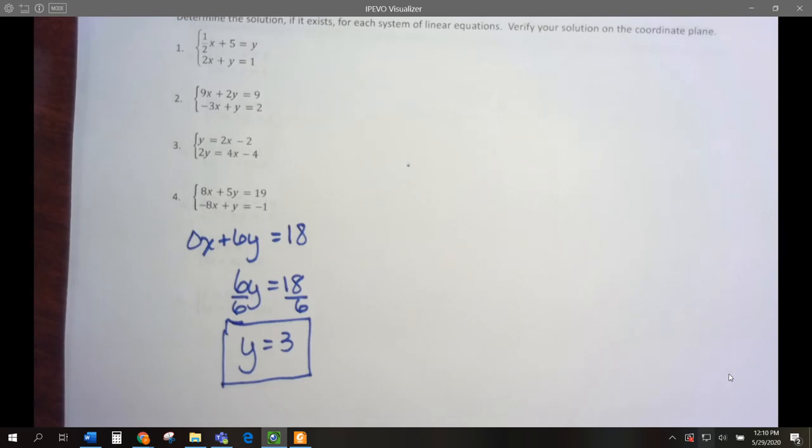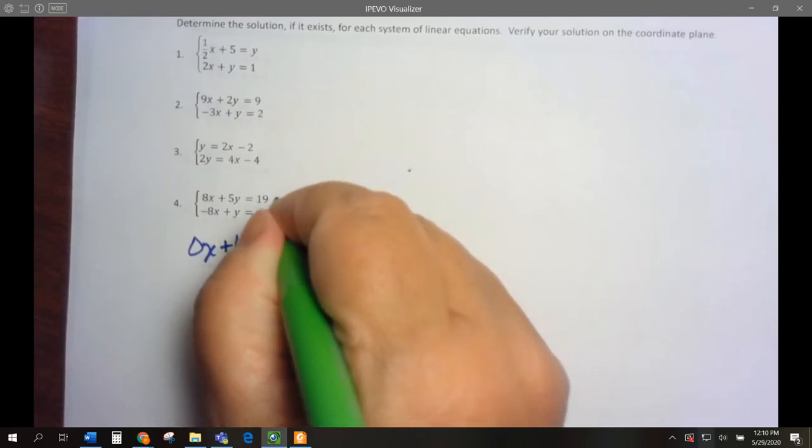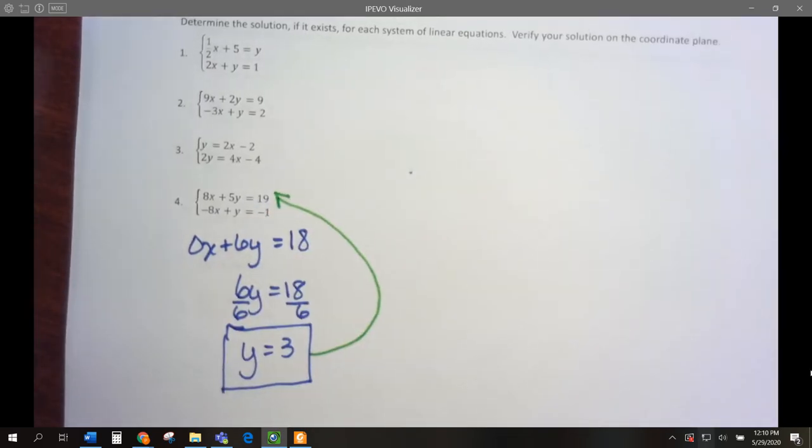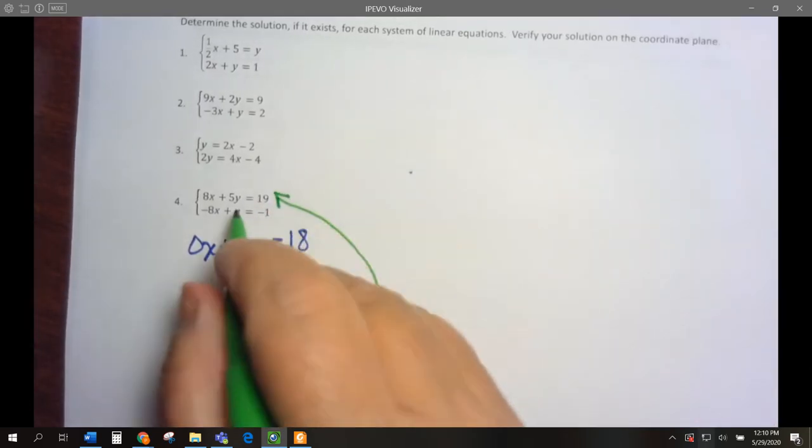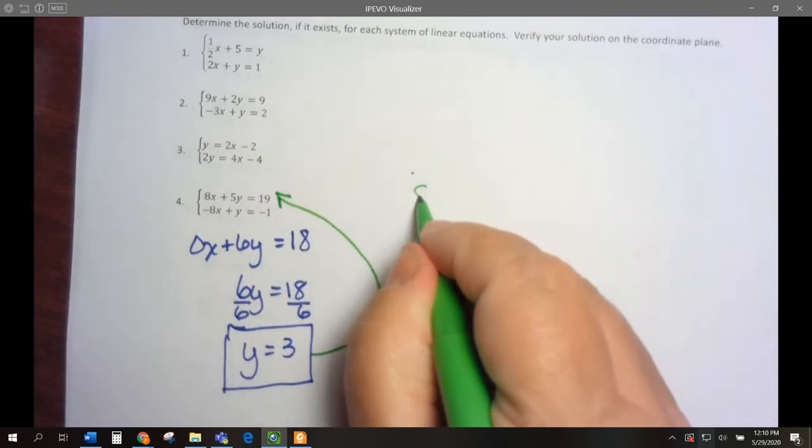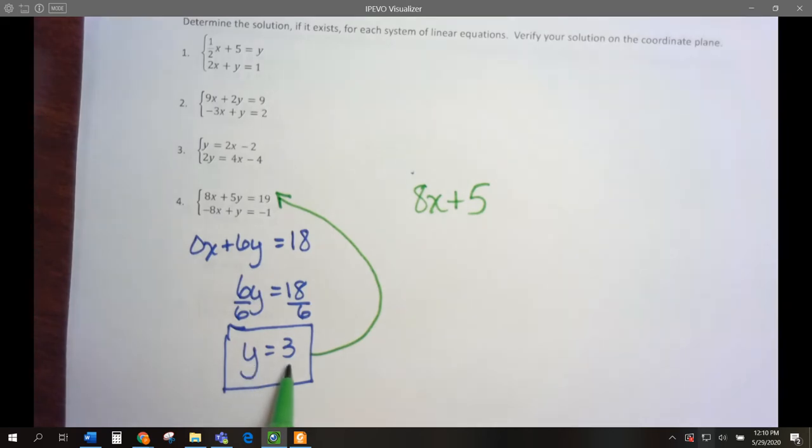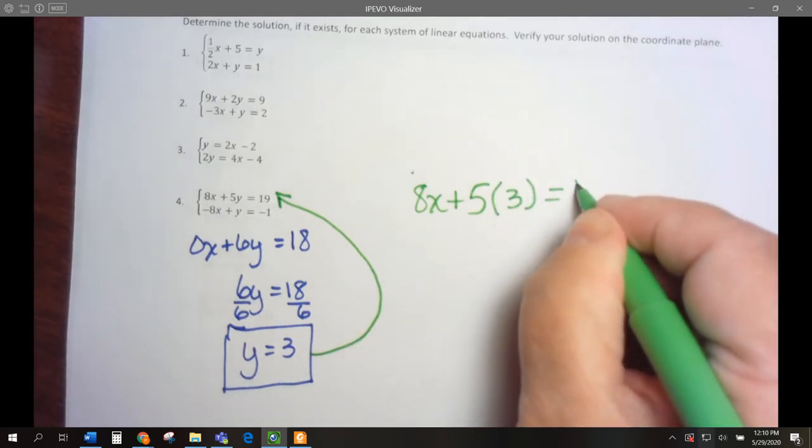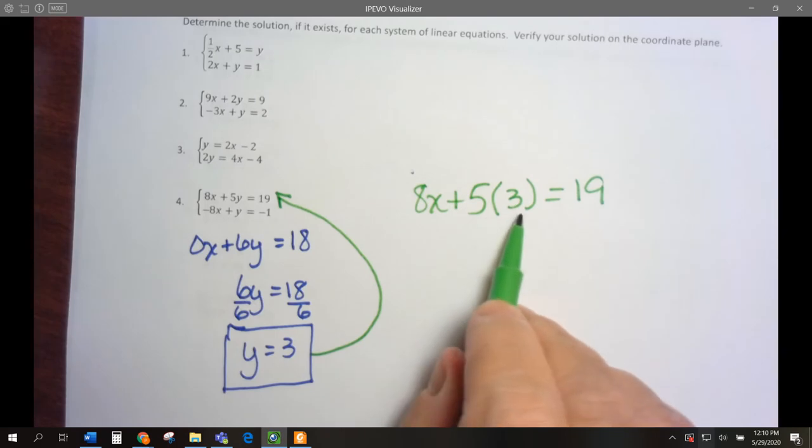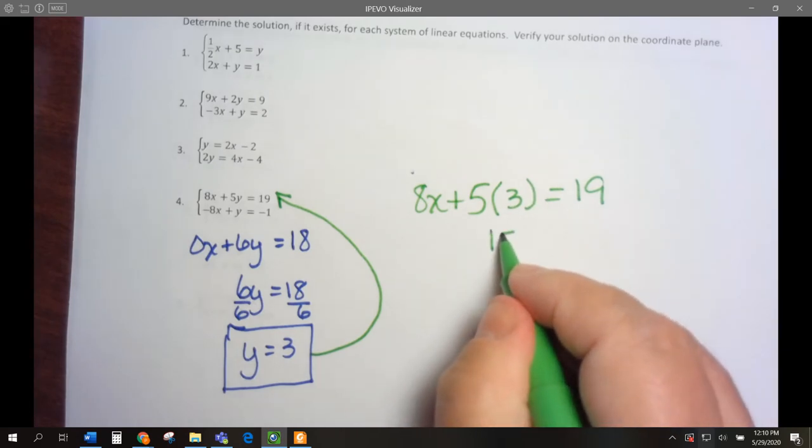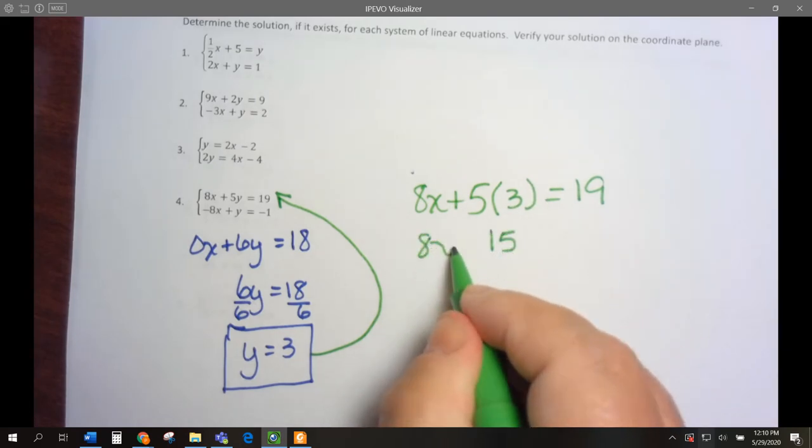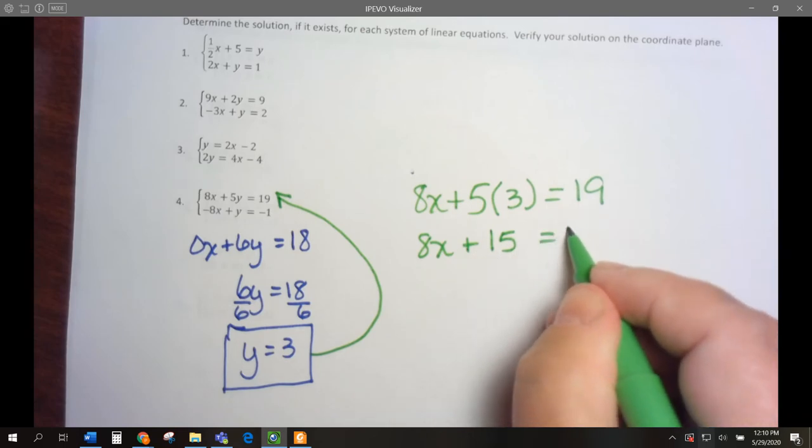Now let's take this and put it into one of the equations. Let's put it into the top equation. We have 8x plus 5y. Y is 3, so 5 times 3 equals 19. 5 times 3 is 15. So I have 8x plus 15 equals 19.